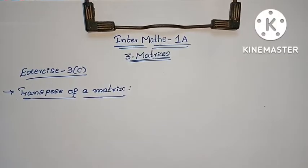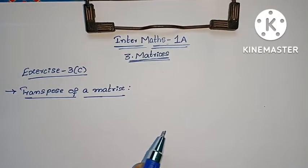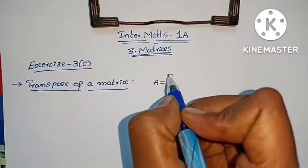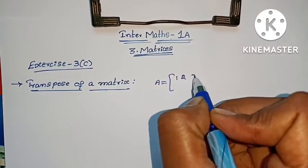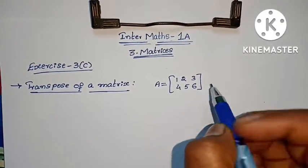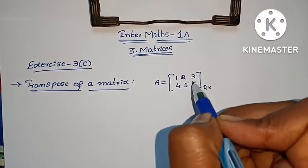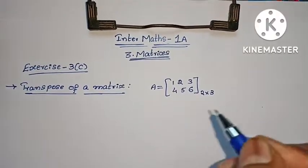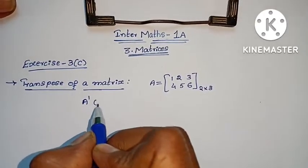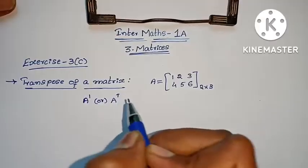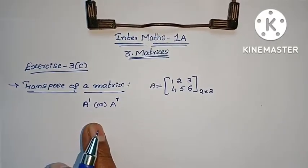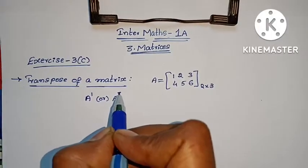First, transpose of a matrix. Now we have to make a matrix with order 1, 2, 3, 4, 5, 6 — that is 2 rows and 3 columns. The transpose of a matrix is denoted A dash or A to the power of T (capital T).